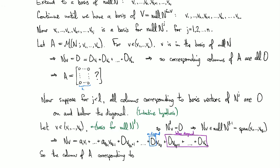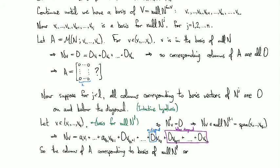So the column of A corresponding to the basis of null space N to the L are zero on and below the diagonal. And that's it. We're done. We did it. You get a box. You deserve it. That was some work.